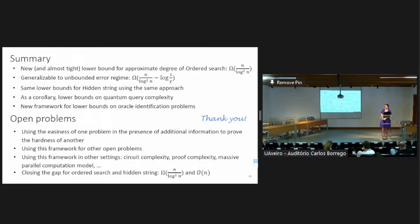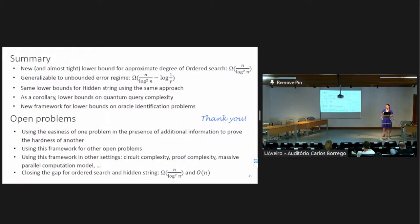I have one question: you have parity that you apply at the end — could you use, for example, majority, which also has query complexity n? Or can you use any query problem whose complexity is n? Right now we are not using that. We tried and we're not able to do this with majority, even though we really want to, because majority is also monotone, and a lot of the problems we are interested in are monotone. With parity, since it's inherently very non-monotone, it's kind of hard to prove lower bounds against monotone problems using this framework. This framework was specifically constructed for parity. We are trying to adjust it for other functions with full complexity, but we have not succeeded yet.